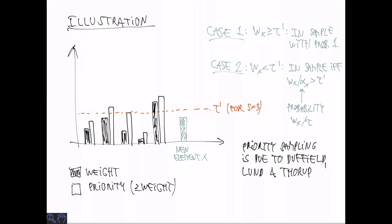Priority sampling is due to Duffield, Lund and Thorup, the latter two which are Danish, and Mikkel Thorup is even a professor at the University of Copenhagen, so you may know him from other courses. It's known to be optimal up to a single sample, in the sense that a priority sample of size s plus 1 is at least as good as a weighted random sample of size s.